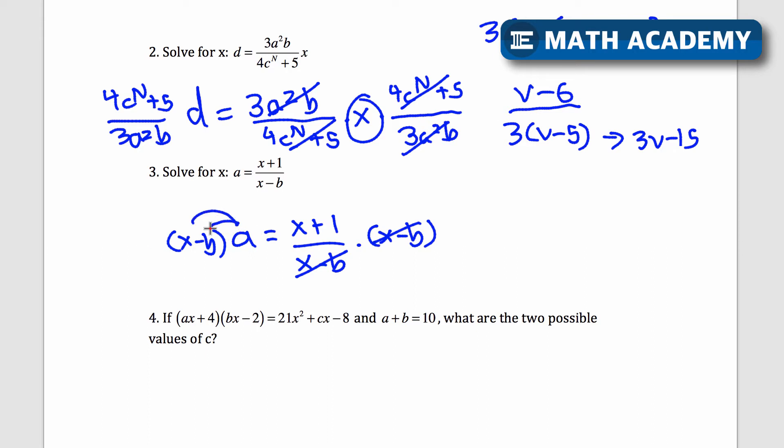So that this is gone in the denominator and all my x's are on the top. So distribute my a and I would get ax minus ab is equal to x plus 1. And then I want to bring all my x's to one side of the equation next. So subtract ax.